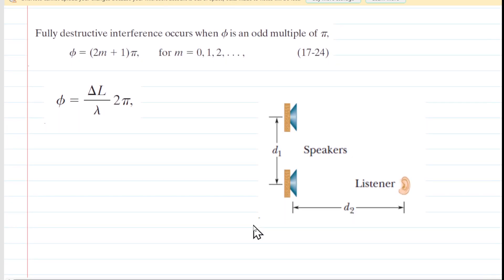We'll come down here and remind ourselves that when you have destructive interference, then phi, which is the phase difference, must be an odd multiple of pi. So mathematically, we can translate that statement into the following equation. We have the phase difference equals an odd multiple, so 2m plus 1 multiplied by pi, where m is an integer from 0, 1, 2, and so on.